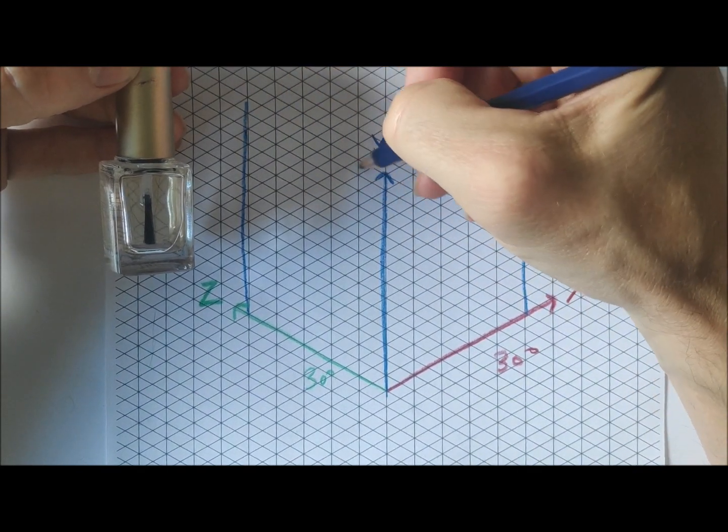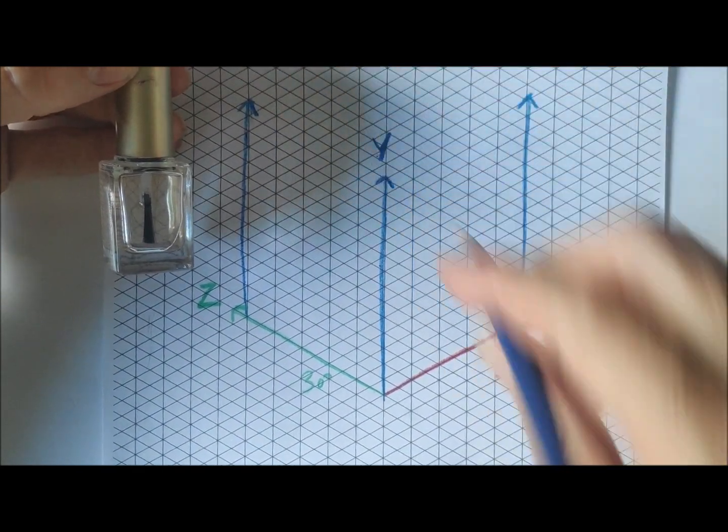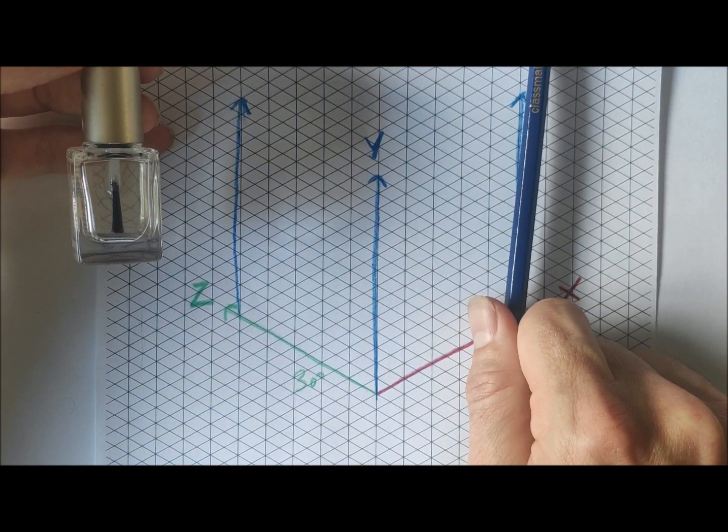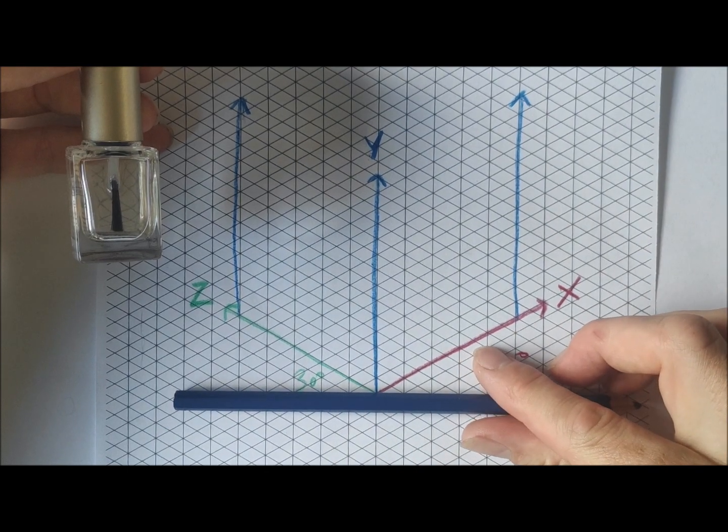And again, what you'll notice is all of these three lines are parallel to each other, very important, and 90 degrees to the baseline.